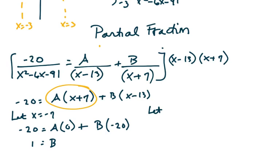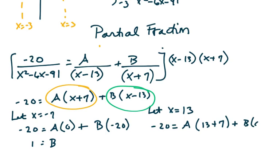If we let x equal 13 in order to get rid of this term, you get minus 20 equals a times the quantity 13 plus 7 plus b times 0. Here you're left with a equals negative 1.